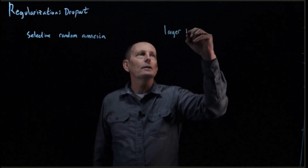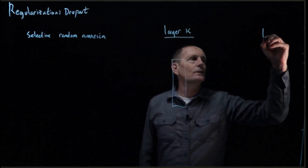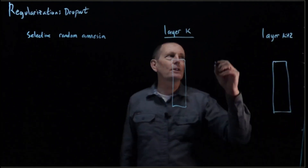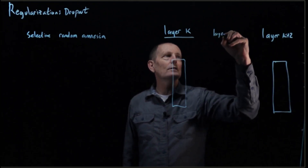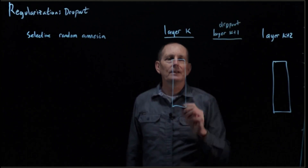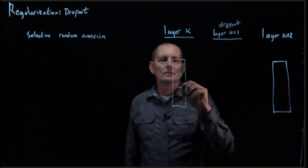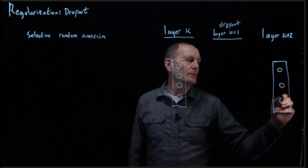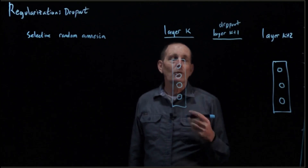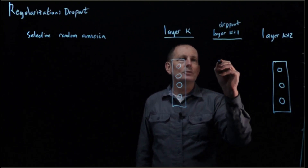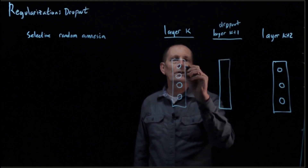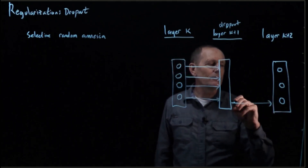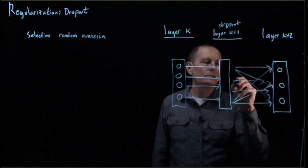So we have layer K in our network and layer K+2. We're going to add in a layer K+1, which is our dropout layer. We've got some nodes here — let's say this is of size 4. Without dropout, this would just be an identity layer, going straight across, and then from here we would do our standard fully connected.